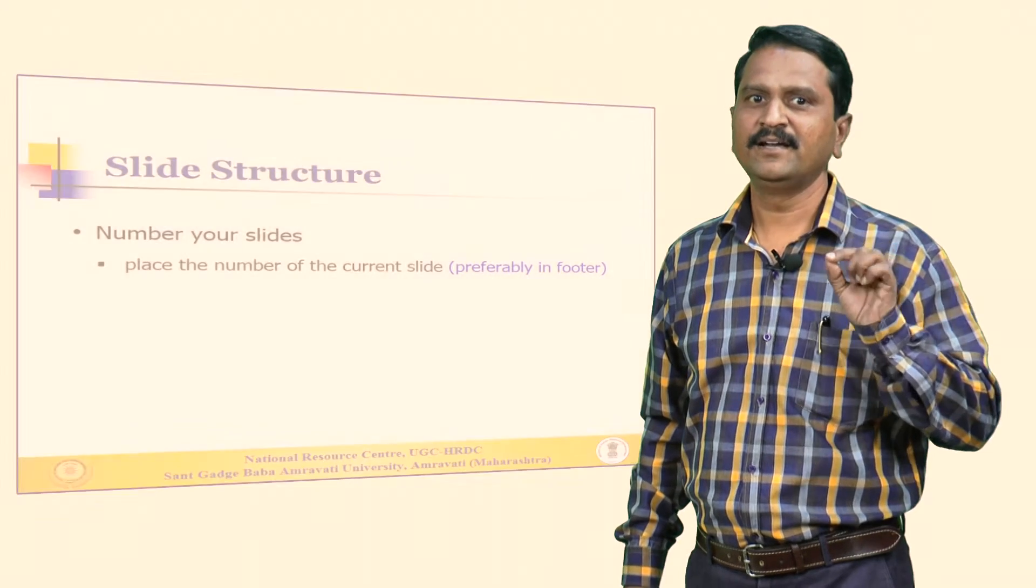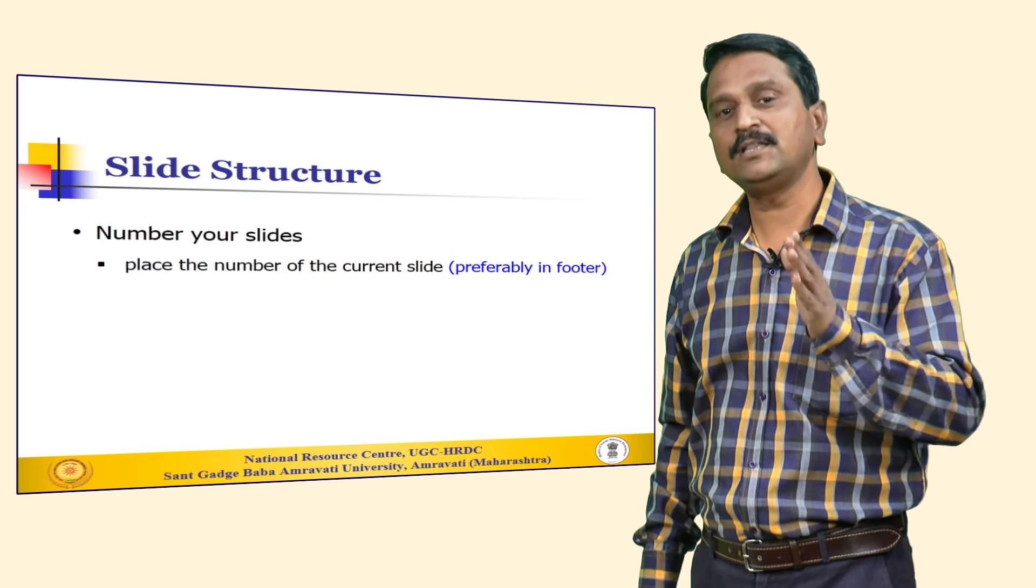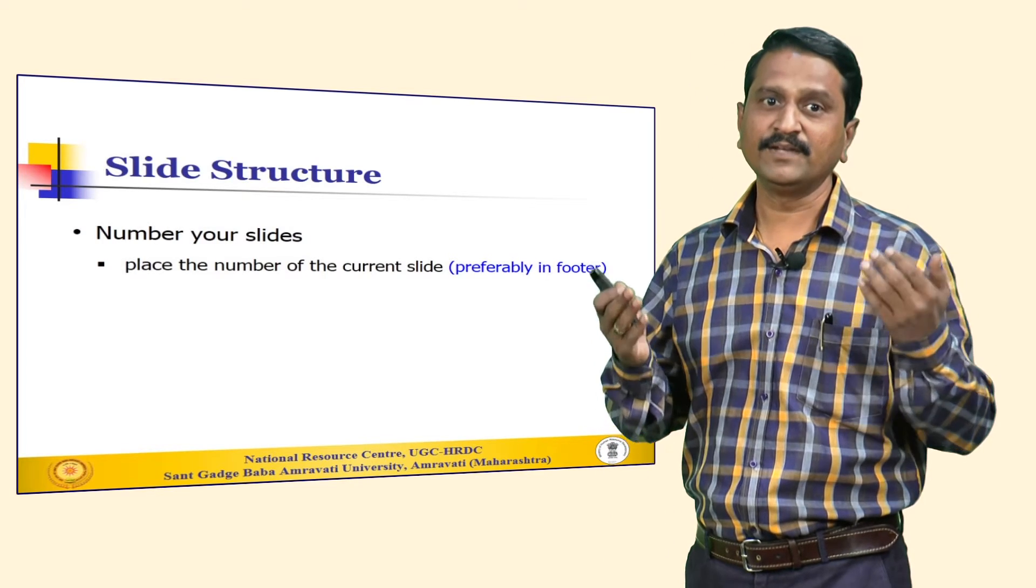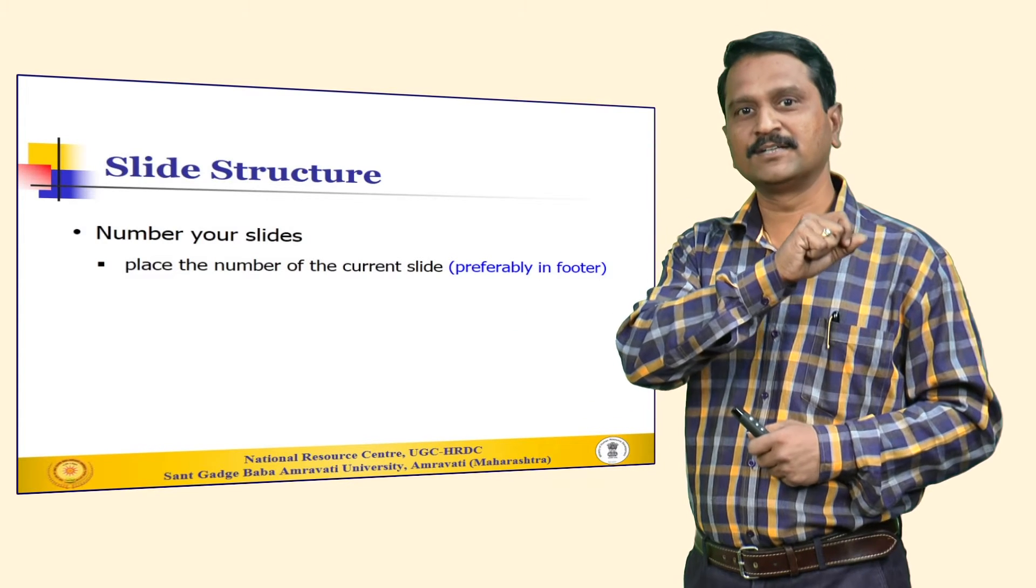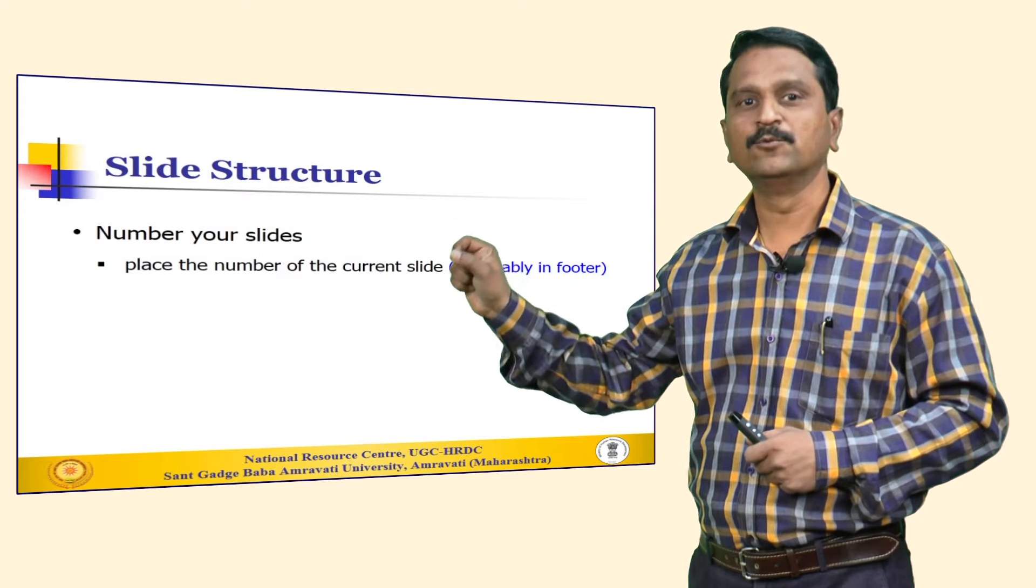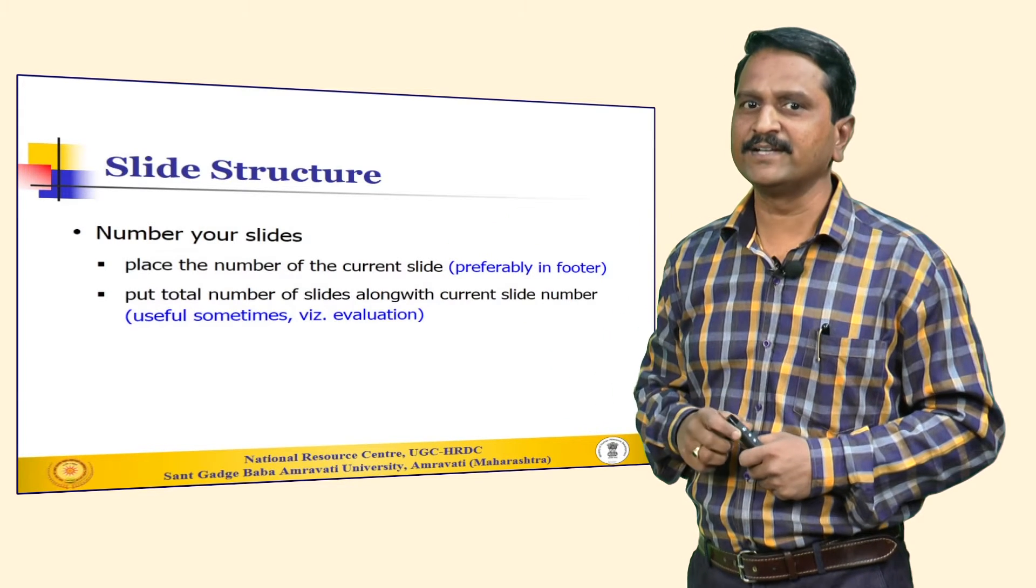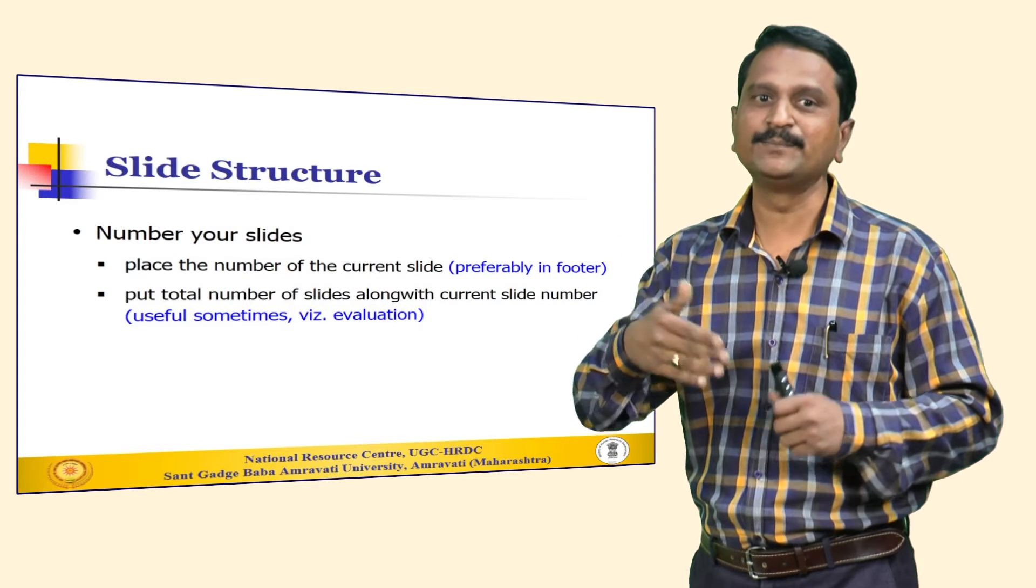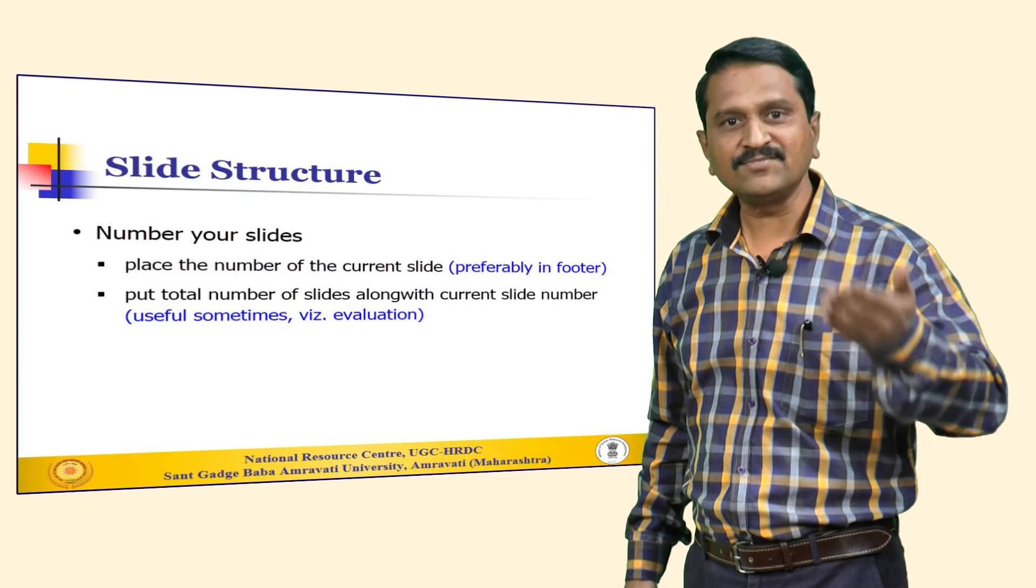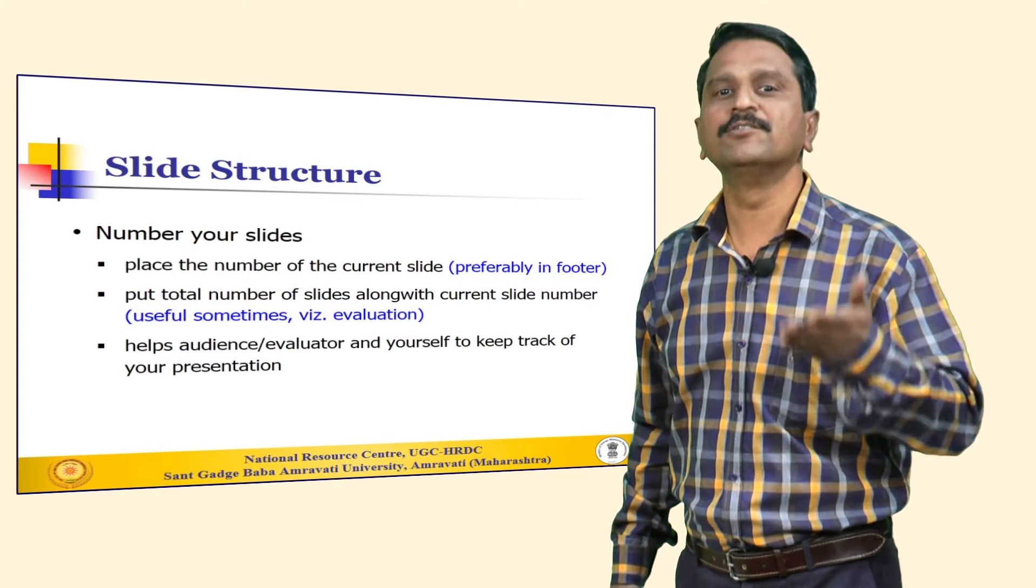The next thing that we must remember with the slide structure is numbering the slide. It is a good practice to number your slide although it is not essential. If you have chosen to use slide numbers then place the numbers of the current slide preferably in the footer. Put total number of slides along with the current slide number. This is especially useful when your presentation is being evaluated. It helps the audience or evaluator and even yourself to keep track of your presentation. The evaluator may get an idea of how much of your presentation is remaining.